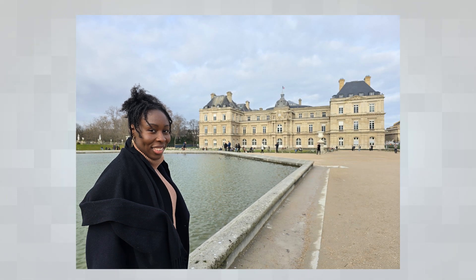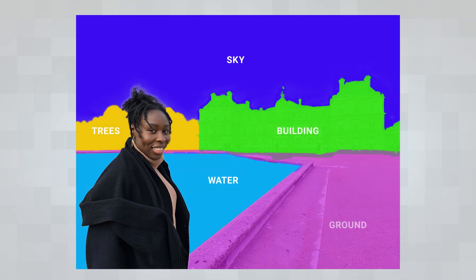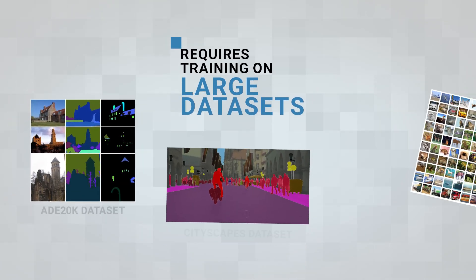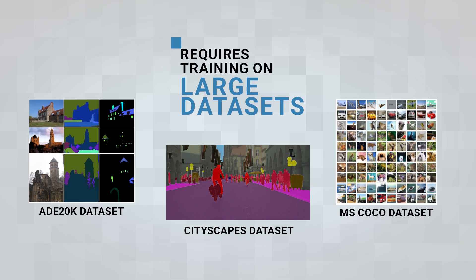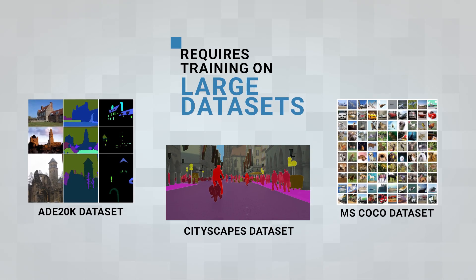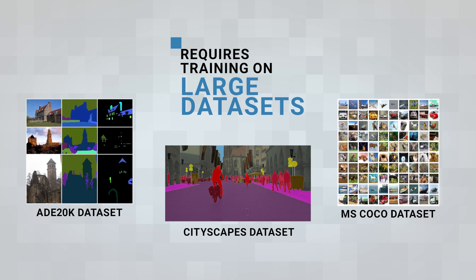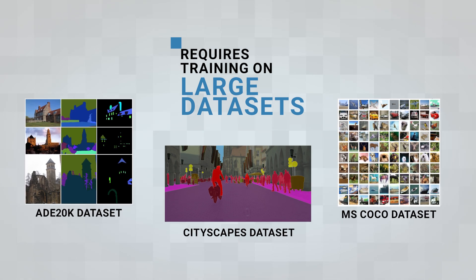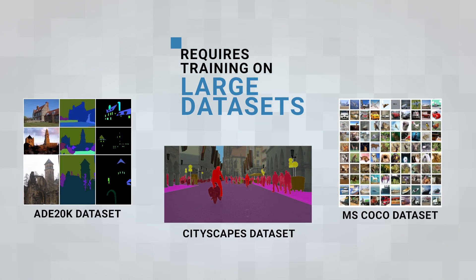However, before these elements can effectively be identified and treated, the model must be trained by a large set of labeled data. There are datasets that specialize in training cameras for segmentation of all types of real-world elements.